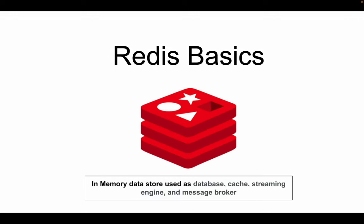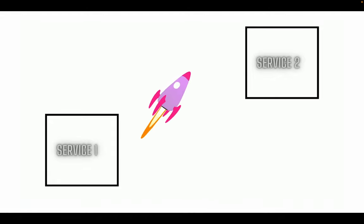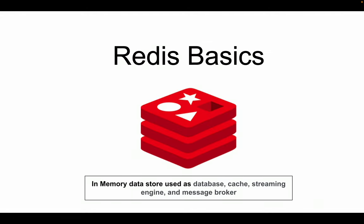Before starting, let me introduce what Redis is — mainly for those who are totally unaware. Redis is a data store used to store data either in an in-memory cache or as a full-fledged database, just like MongoDB. You can also use it as a streaming engine and a message broker. The pub/sub model, similar to RxJS in Angular, is provided by Redis, which helps with features like communication between different microservices.